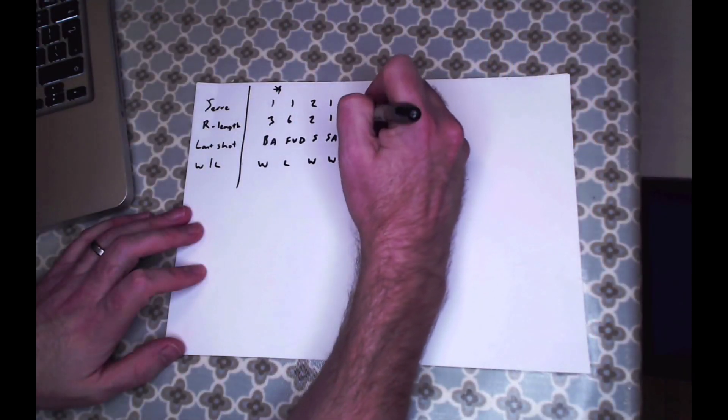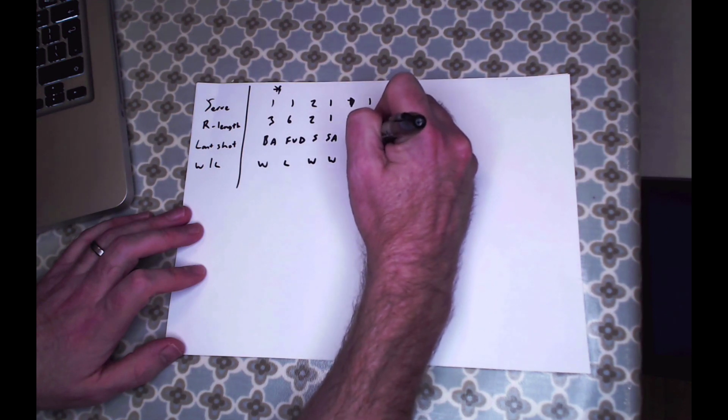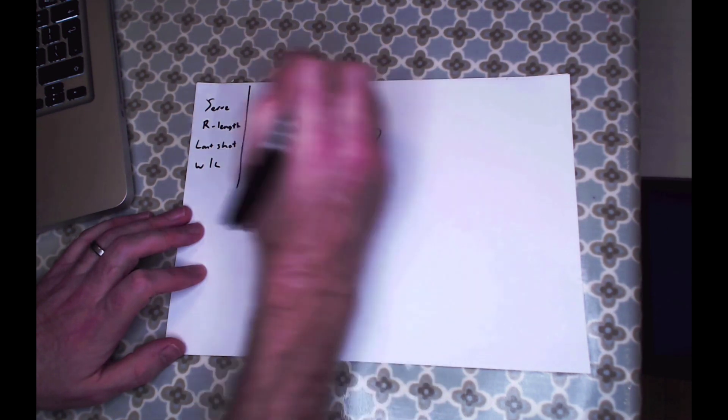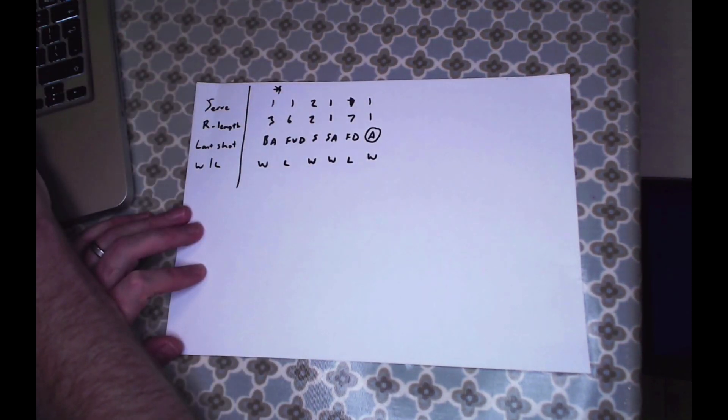Nice one. First serve, one shot, ace. A circle around for ace, and then won. So I'm going to carry on doing this and you'll see how much information we can get at the end.